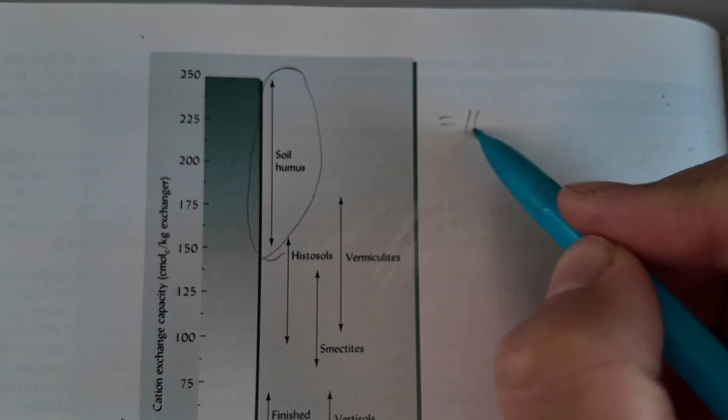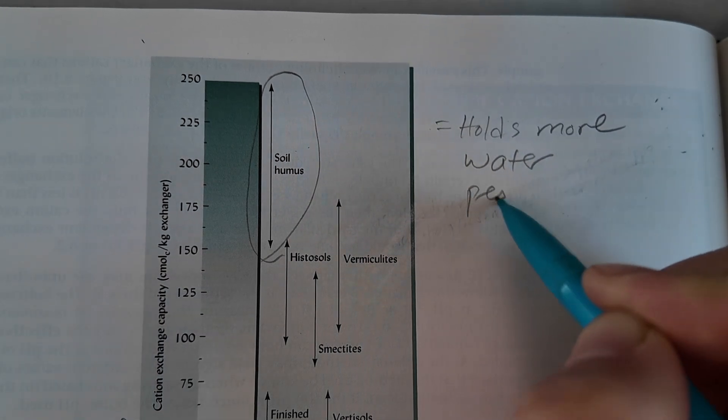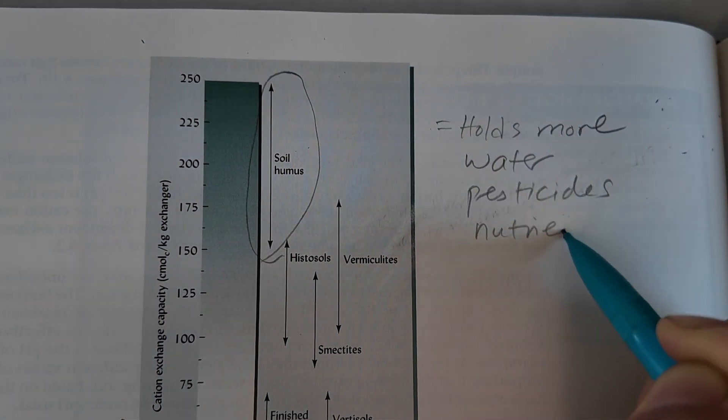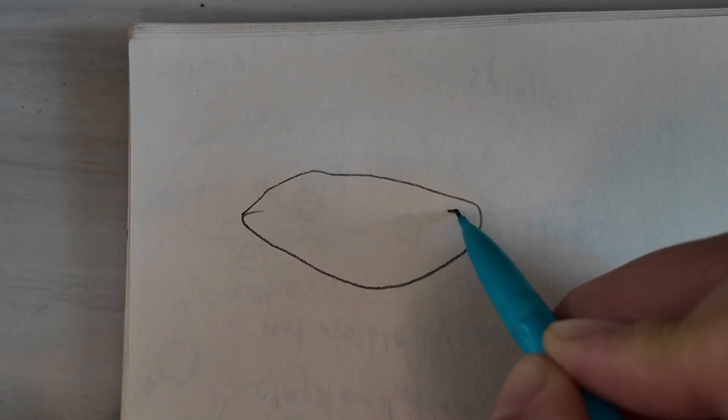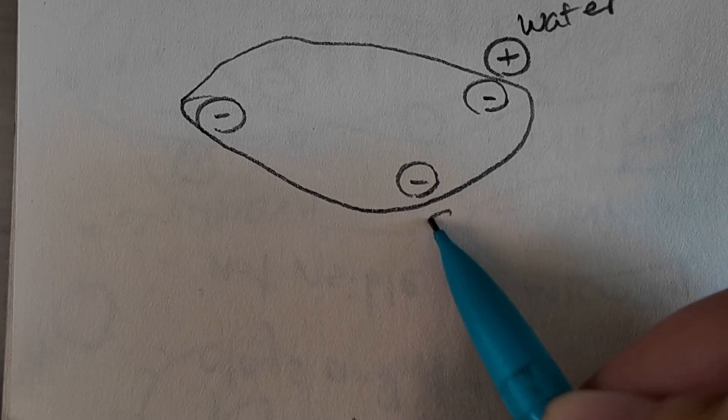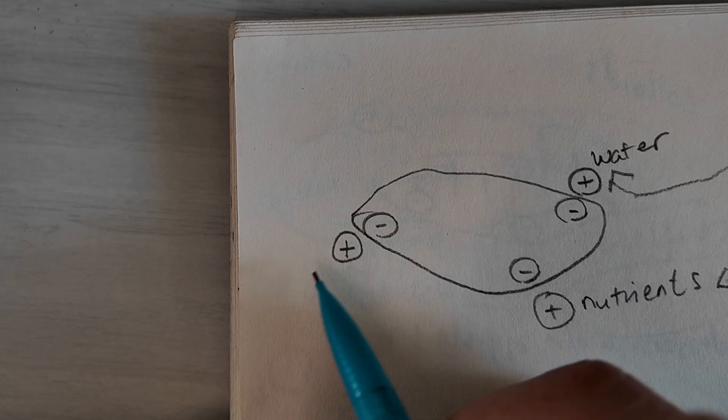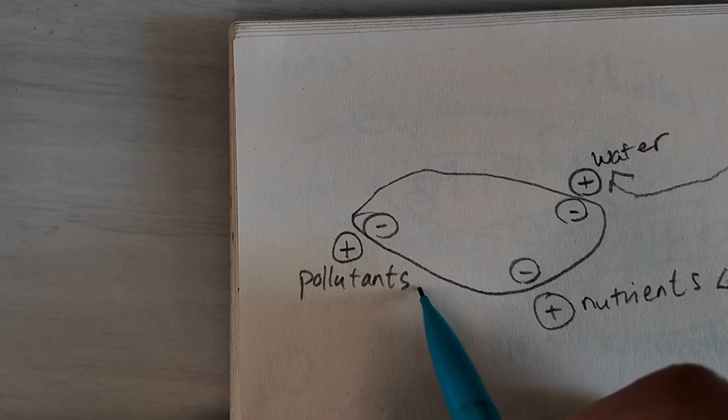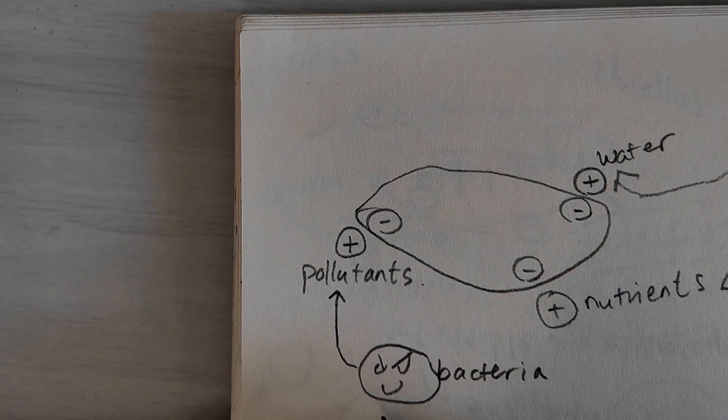The cation exchange capacity is a really important property because it represents how many nutrients, pesticides, things like that, that can be held in the soil. The higher your CEC, the more nutrients are held for plants to take up. For damaging things like toxic substances, those things can be bound in the soil until microorganisms start breaking them down.